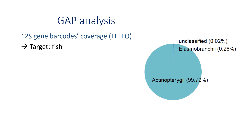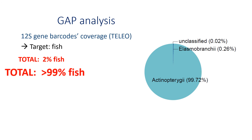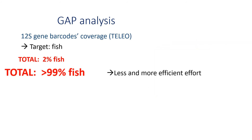Instead, if using 12S barcodes which are specific for fish, such as Teleo, we can see that more than 99% of detections correspond to fish. Comparing the detection levels of both kinds of barcodes shows that it really matters, and this may lead to less effort and more efficiency for future work. We may therefore be more interested in focusing on the 12S gene, which is less covered than COI, but may ultimately be more useful.